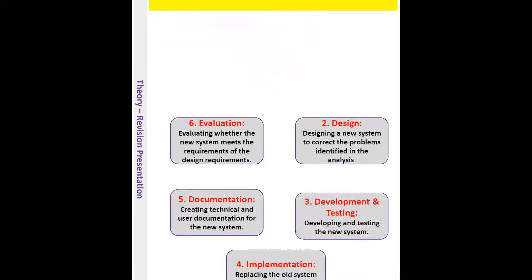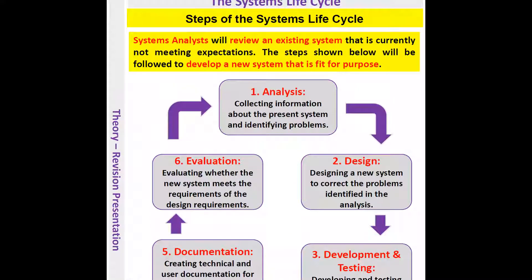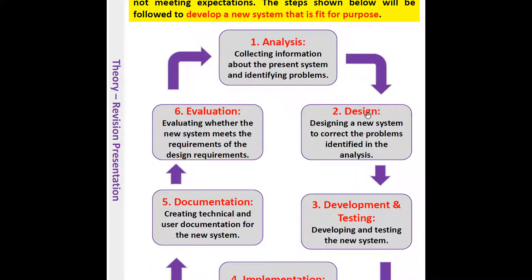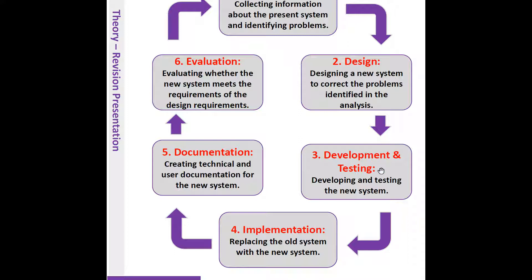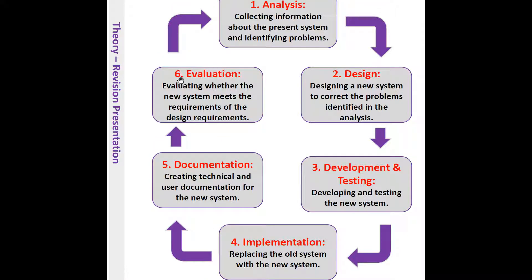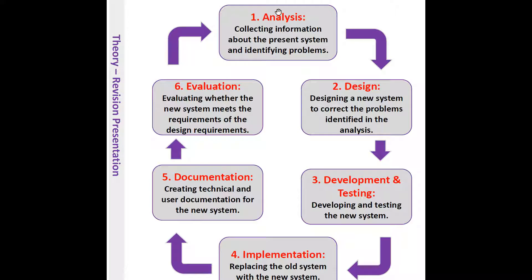This is a systems life cycle. What we want to do is create a new system. We've identified in the analysis stage there's a problem with the current system — it's not working, it's not meeting expectations. So in the design stage, we design a new system that's going to correct those problems. In development and testing, we actually create the system and test it to see if it's working. Implementation is when we put the system into place so it's functioning within the organization. With the system, we need to provide some documentation, then evaluate, and if there are still issues, go back to the analysis stage.